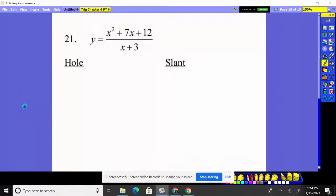We're going to see, does the top factor? It does. X plus three times an x plus four over x plus three. These are going to cancel. This guy is nothing more than the simple line y equals x plus four. That's all it is.